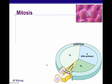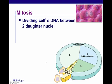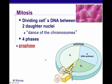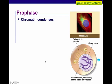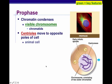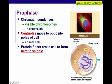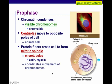Mitosis is about dividing a cell's DNA between two daughter nuclei — called the dance of the chromosomes. It's in four phases: prophase, metaphase, anaphase, and telophase. In prophase, the chromatin condenses into visible chromosomes and chromatids. The centrioles move to opposite poles of the cell in an animal cell, and protein fibers form a mitotic spindle — these microtubules are made up of actin and myosin and coordinate chromosome movement.